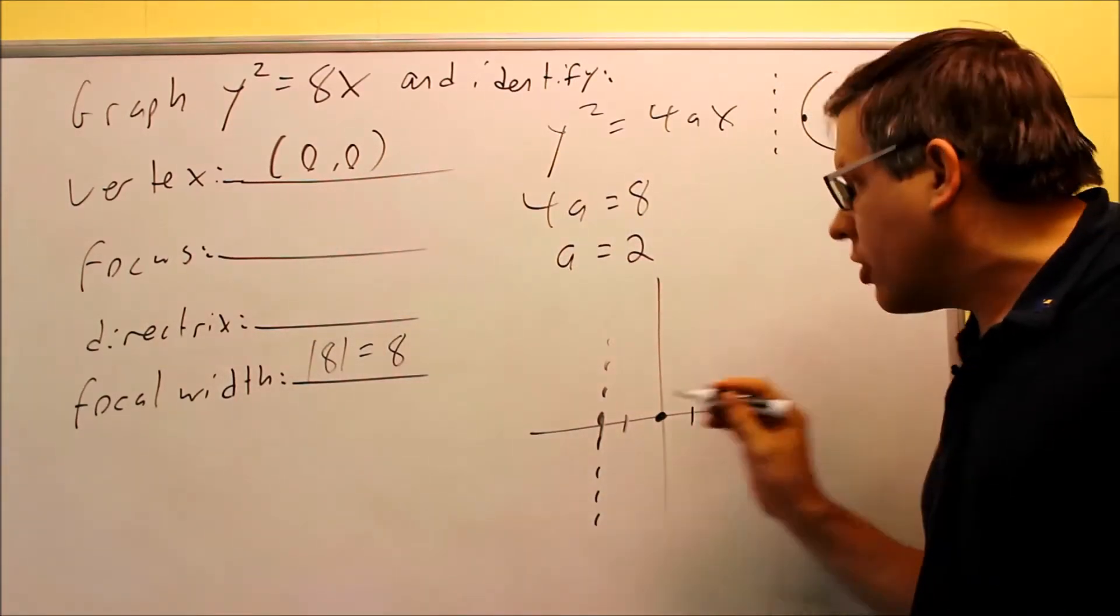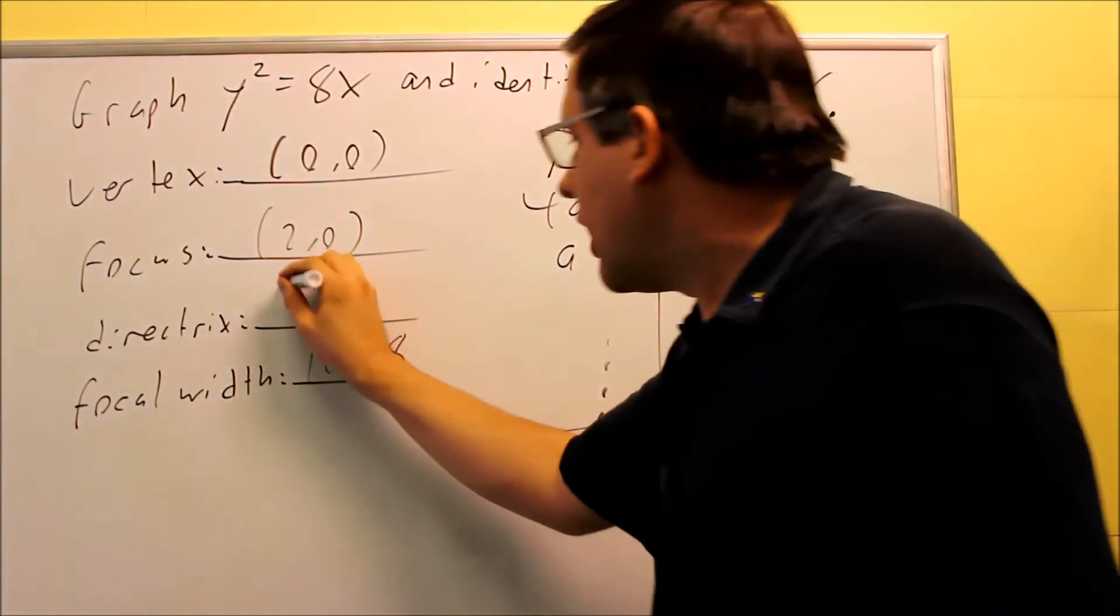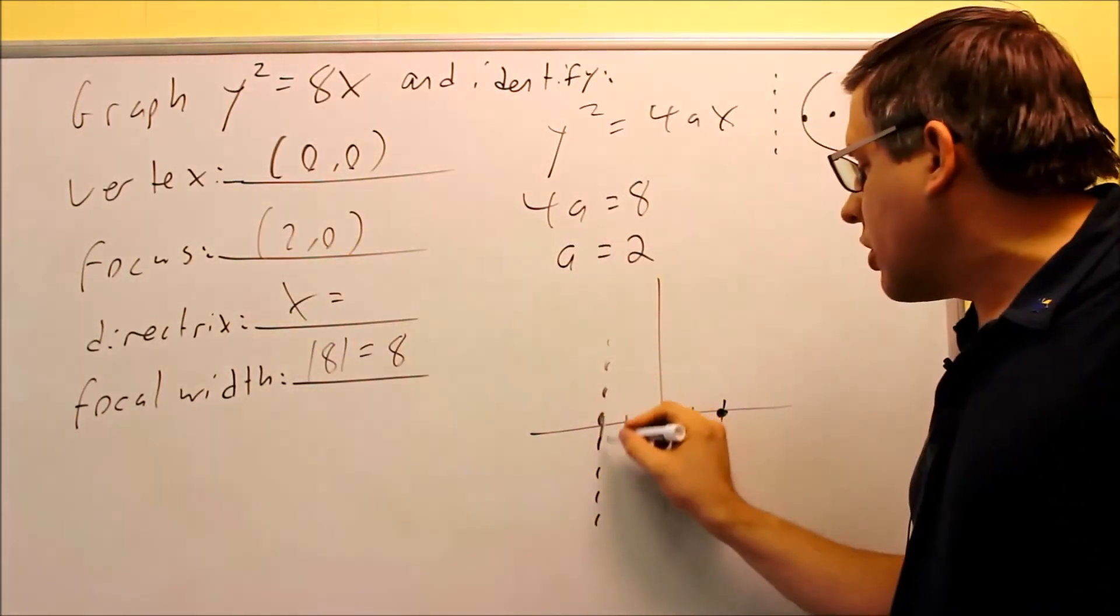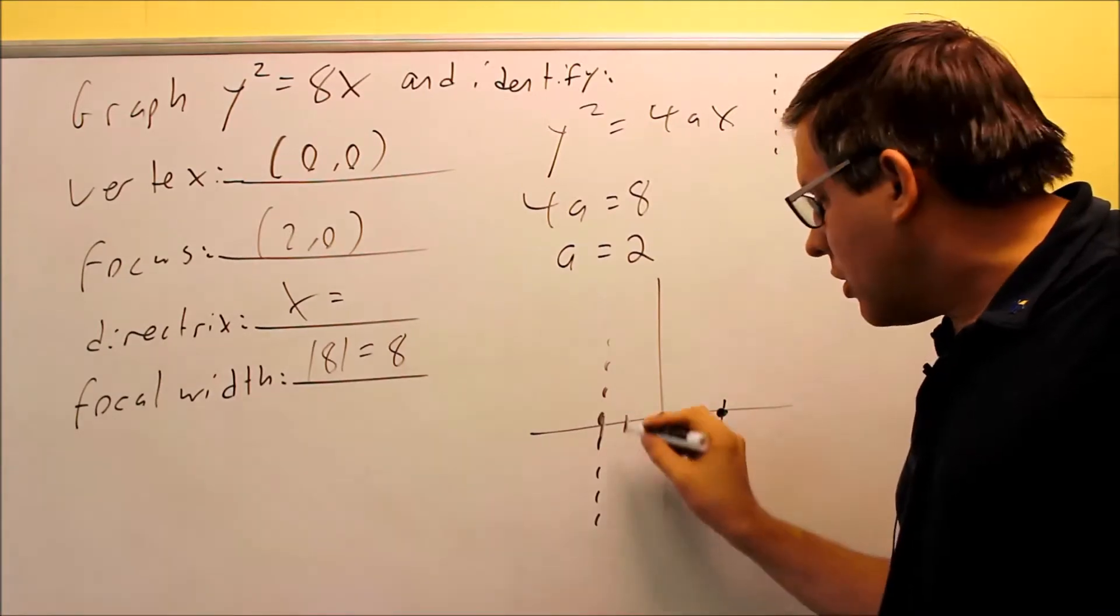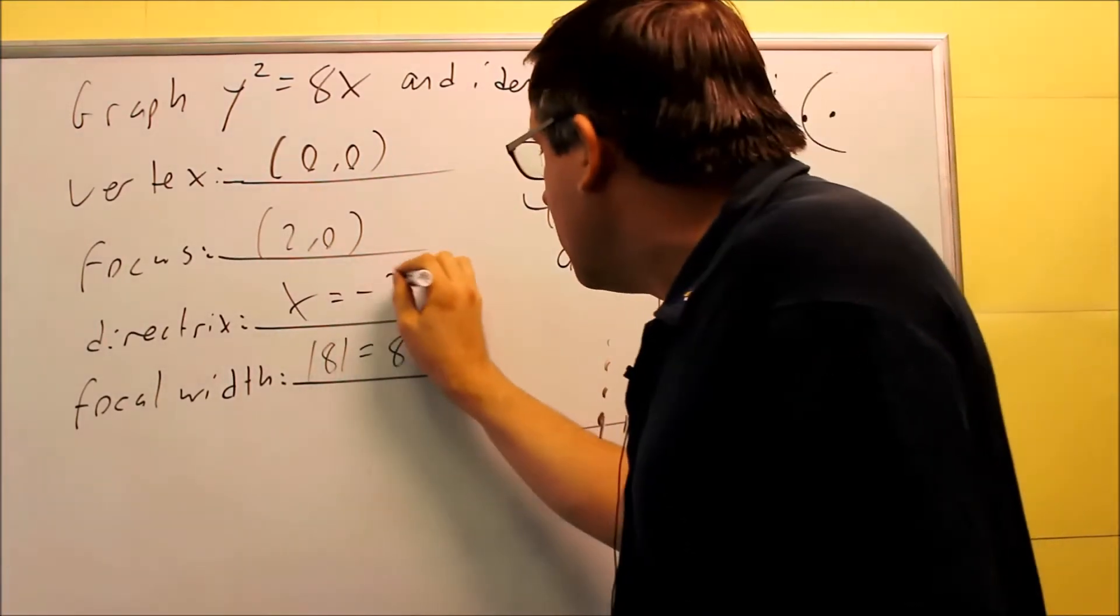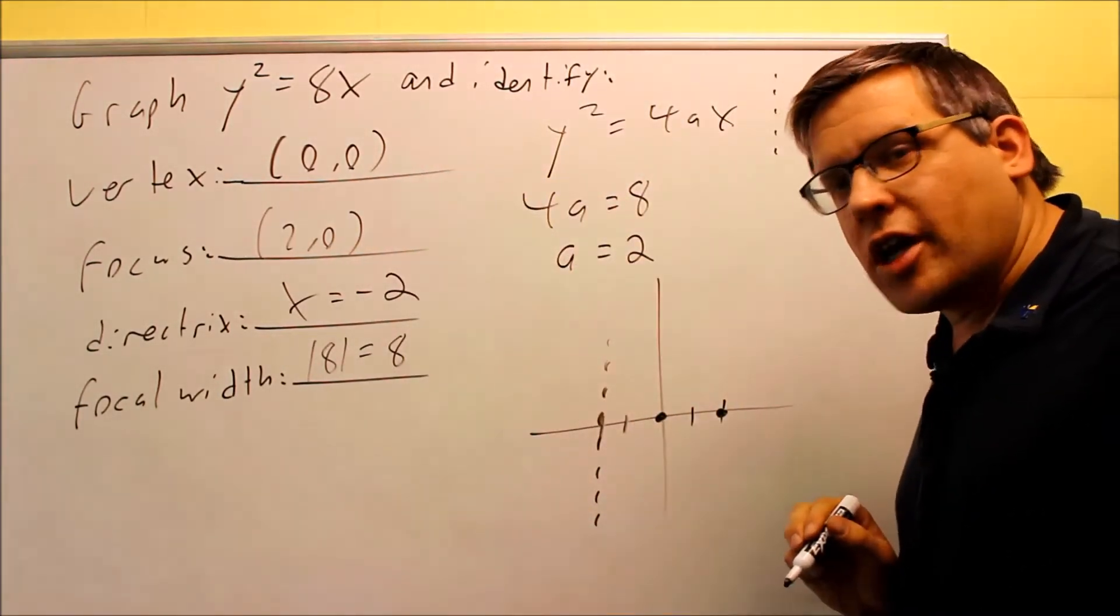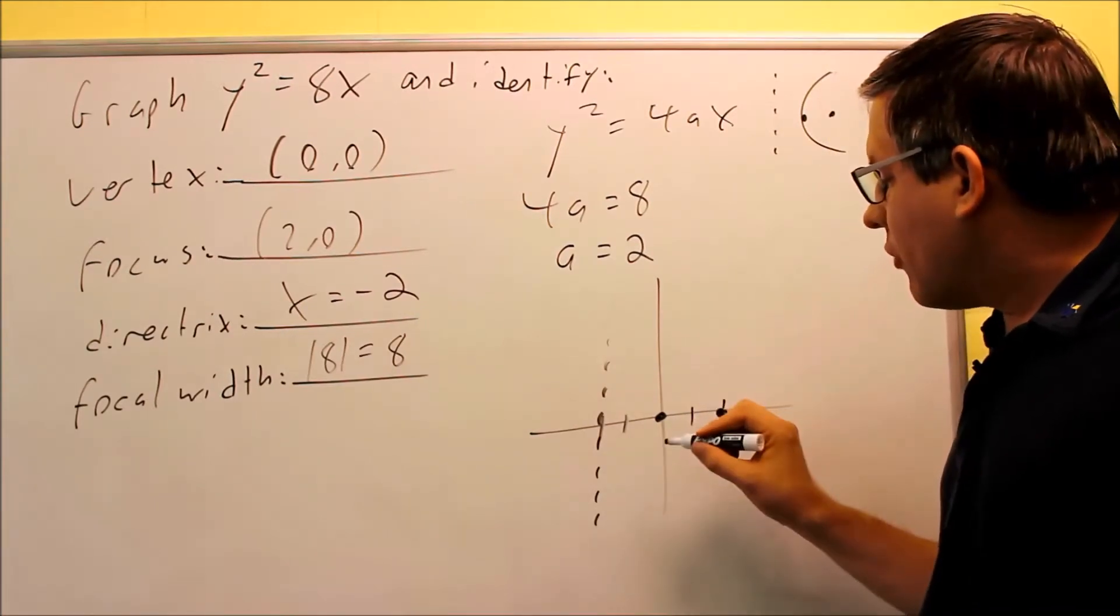The focus, we just write the coordinate for that. That's going to be 2, 0. Your directrix, it's a vertical line, starts with x equals, and it's going to go through the x coordinate, or it goes across the x-axis, I should say, at negative 2. So that's all the information. Focus is 2, 0. Directrix is x is equal to negative 2.